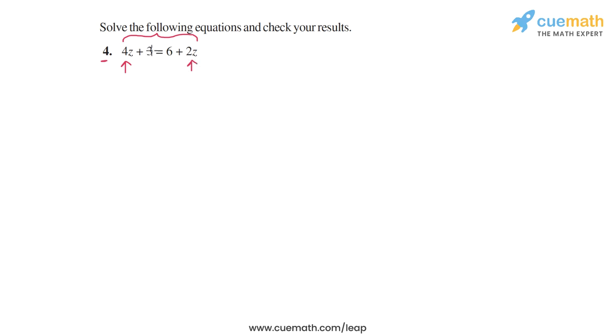So let's start by first combining the constant terms on the two sides. We have plus 3 on the left hand side. Let's transpose it to the right hand side so that it combines with 6.